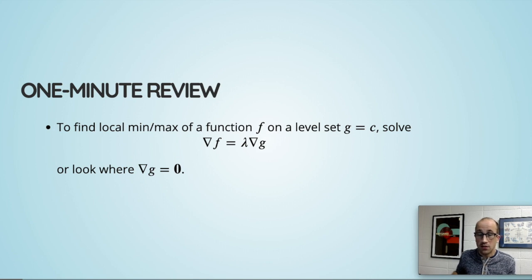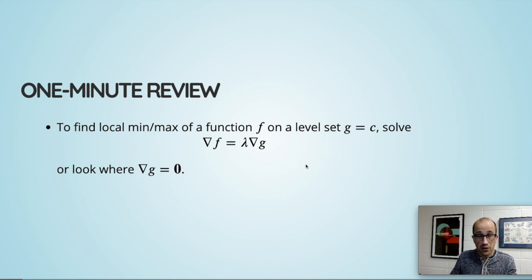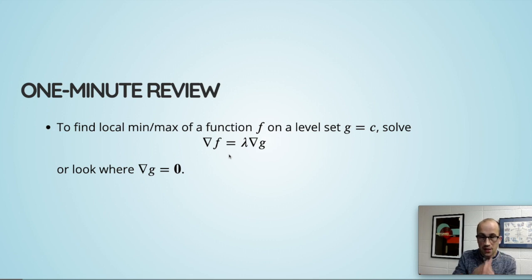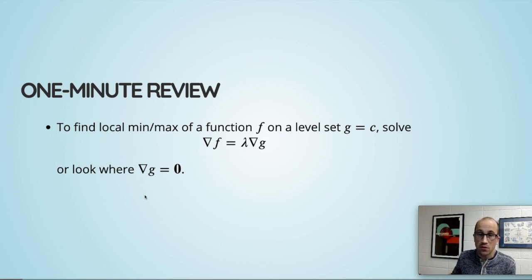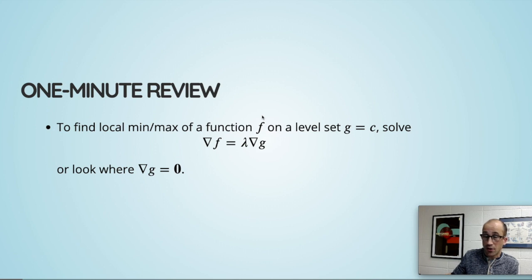Quick review: Lagrange multipliers. This is a topic we should know and be ready to use. What is it for? Finding local maxima and minima of a function f given a constraint — namely that your variables must stay on the level set of some other function g. In that setup, we look for extreme points where the two gradients point in the same direction. One thing to be careful about: where the gradient of g is zero, we can't solve this equation, but that might also be an extreme point — a rare circumstance, but one you can miss if you're not looking. Today we're crossing a dividing line, moving out of differential calculus into integral calculus in a multivariable setting.